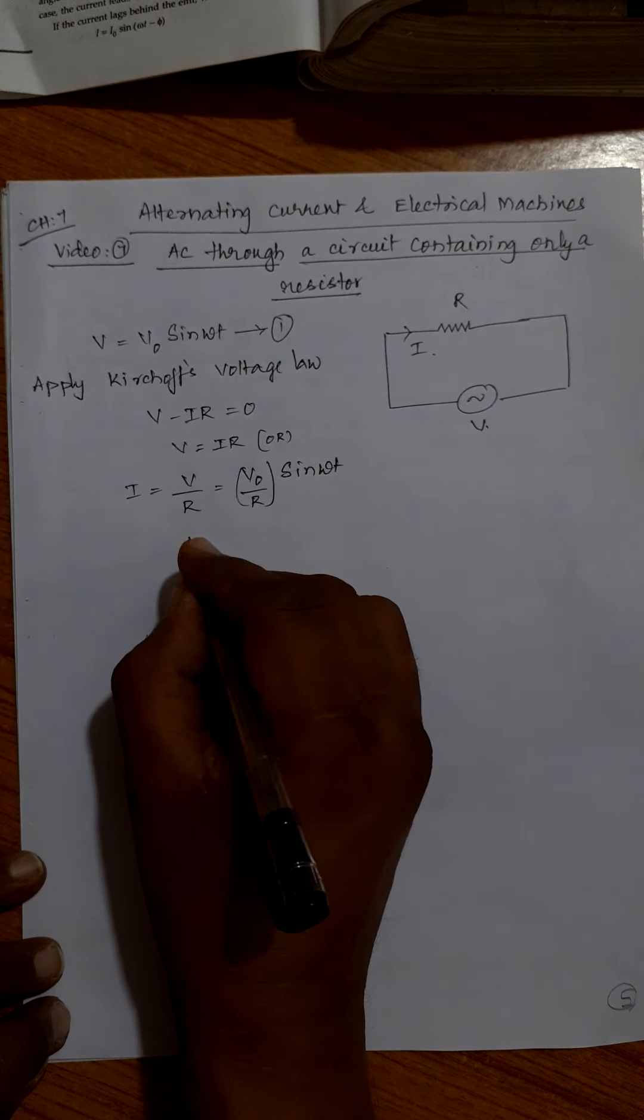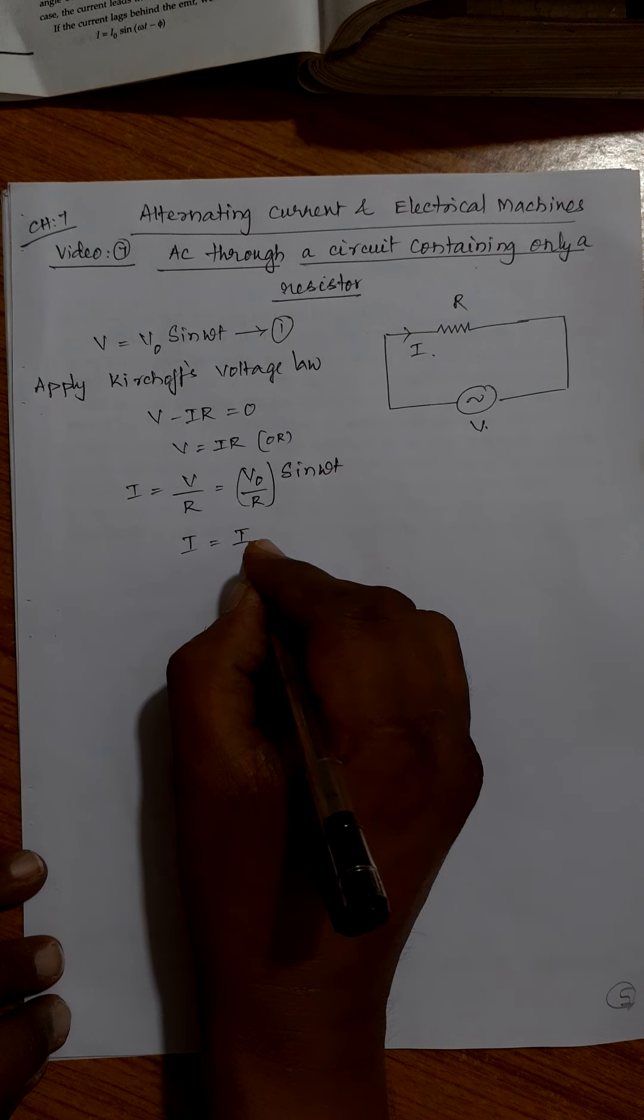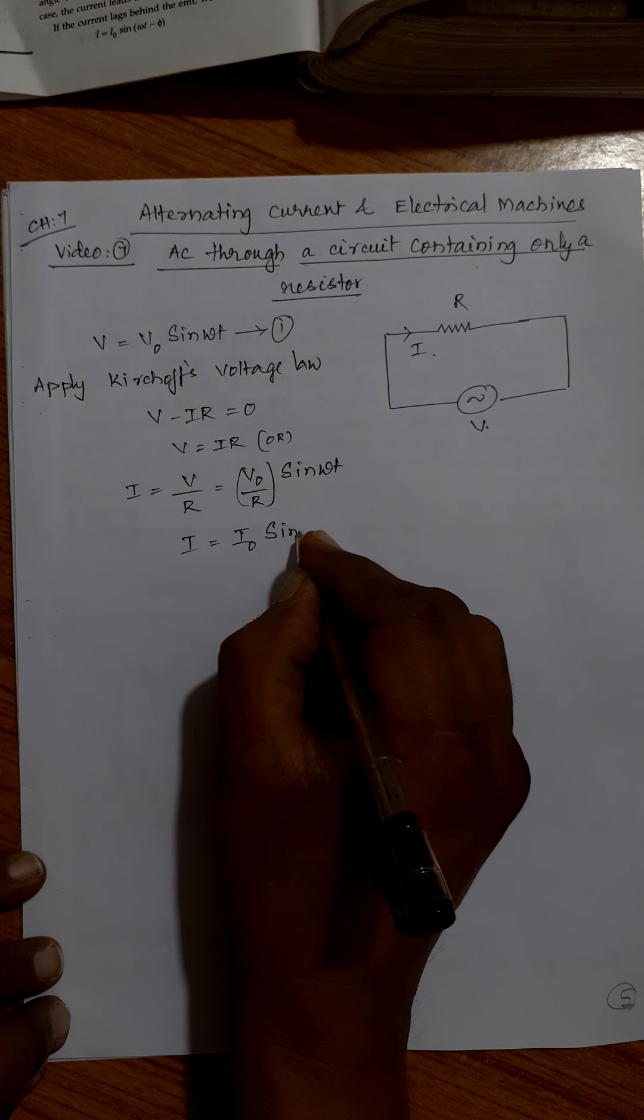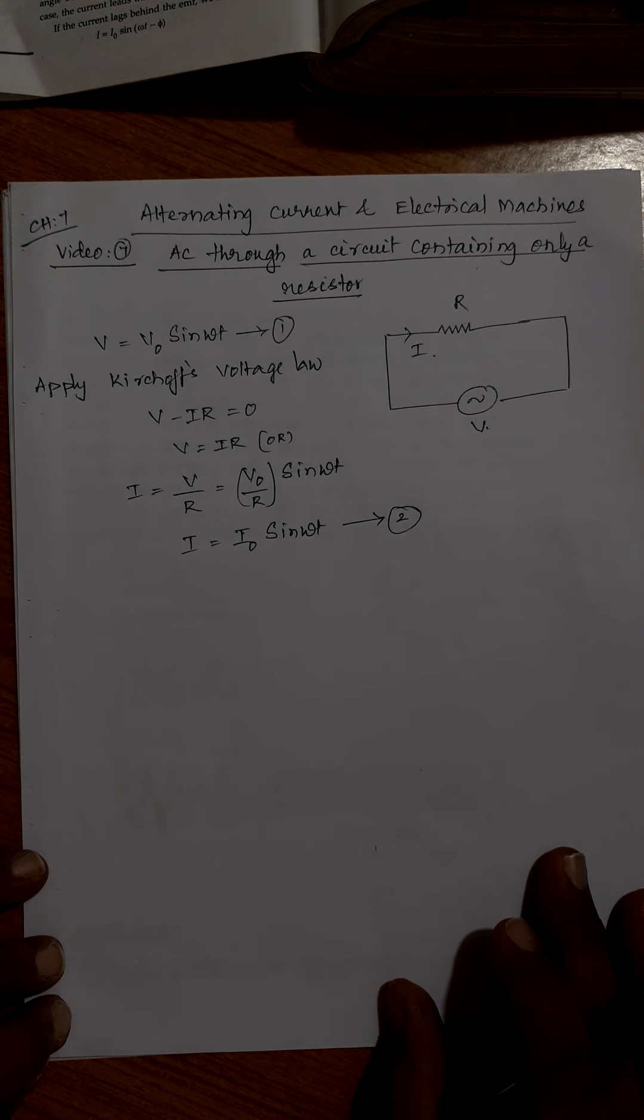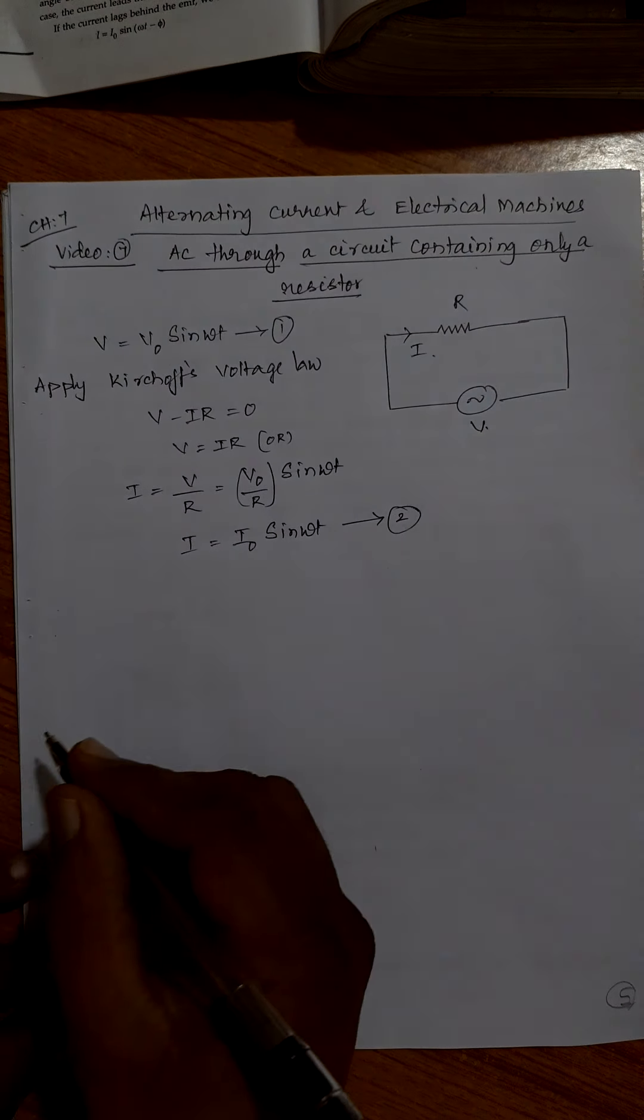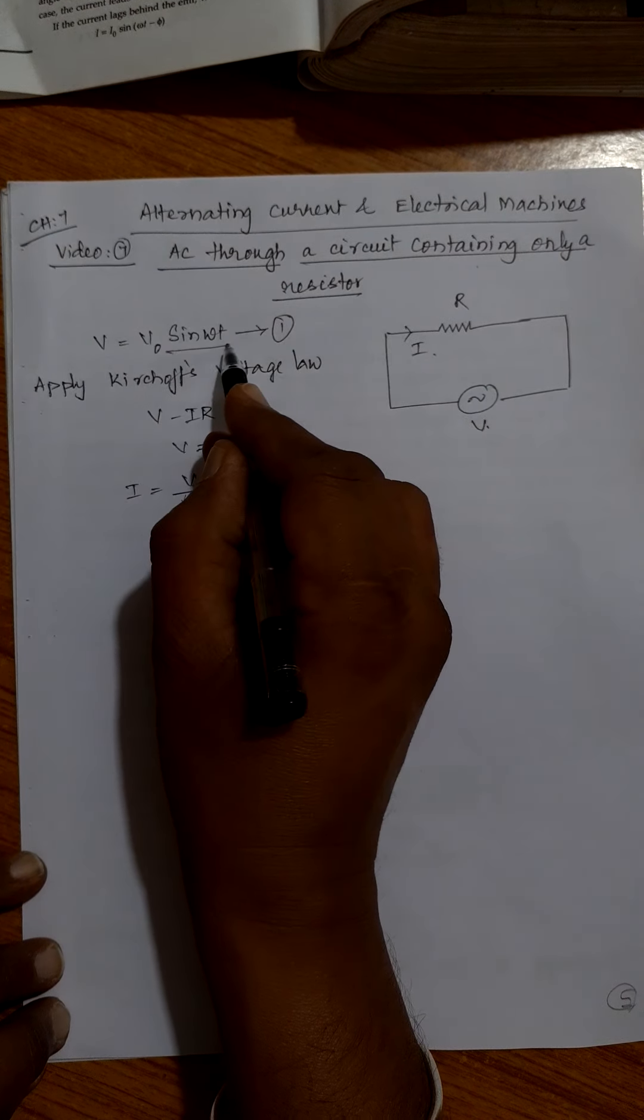V can be written as V naught sine omega t by R. V naught by R is known as peak value of current. I naught sine omega t. Equation 2.